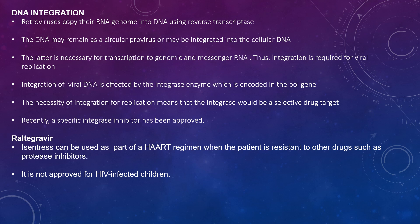DNA integration: retroviruses copy their RNA genome into DNA using reverse transcriptase. The DNA may remain as a circular episome or may be integrated into cellular DNA. Integration is necessary for transcription of genomic and messenger RNA, and thus integration is required for viral replication. Integration of viral DNA is affected by the integrase enzyme, which is encoded in the pol gene. A specific integrase inhibitor has been approved: raltegravir. It can be used as part of a HAART regimen when a patient is resistant to other drugs such as protease inhibitors, though it is not approved for HIV-infected children.